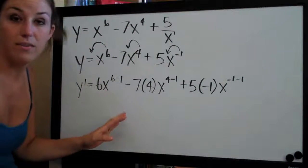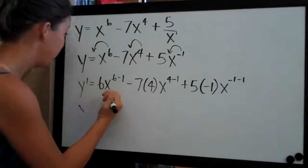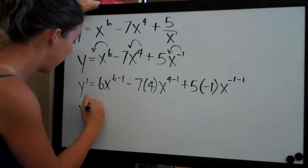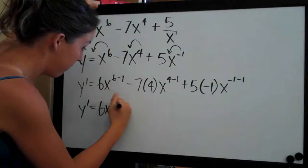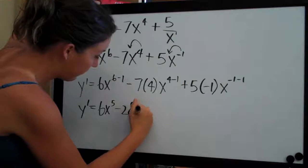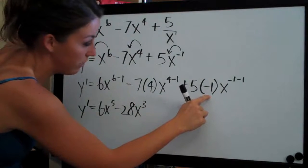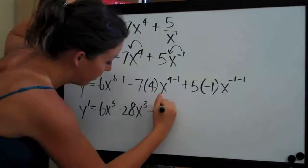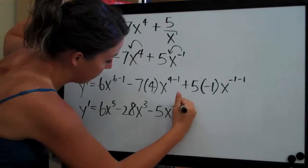So now we've taken the derivative and all we have to do is simplify. So when we simplify, we'll get y prime equals 6x to the 5 minus 28x to the 3, and then this 5 times negative 1 is going to be a negative 5. So we'll just have minus 5x to the negative 2.